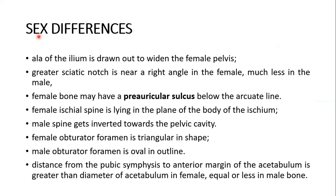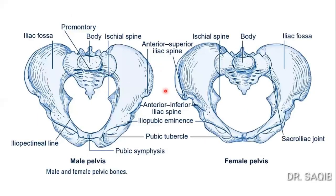Sex differences in the male and female hip bones: the ala of the ilium is drawn out to widen the female pelvis. The greater sciatic notch is near a right angle in the female, much less in the male. The female bone may have a pre-auricular sulcus below the arcuate line. The female ischial spine lies in the plane of the body of the ischium, while the male spine is inverted toward the pelvic cavity. The female obturator foramen is triangular and the male is oval. The distance from the pubic symphysis to the anterior margin of the acetabulum is greater than the diameter of the acetabulum in the female, and equal or less in the male.